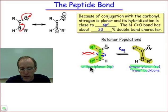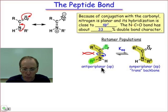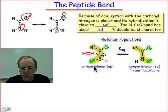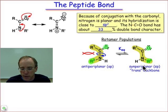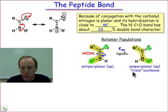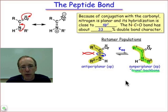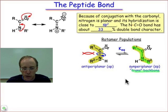The reason we call them anti-periplanar and syn-periplanar is because the dominant atoms, which take on top priorities, are oxygen and R2. In the anti-periplanar conformation, R2 and oxygen are on opposite sides of that carbon-nitrogen double bond, whereas in the syn-periplanar, oxygen and R2 are on the same side. We also refer to this as trans when thinking about the backbone: R1 and R2 are alpha carbons, and in the syn-periplanar conformation those atoms have a trans relationship to one another.